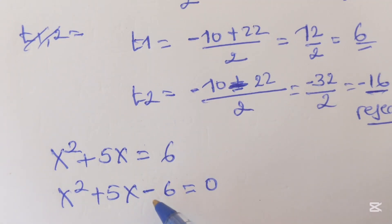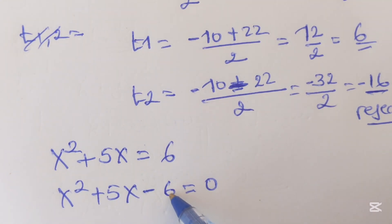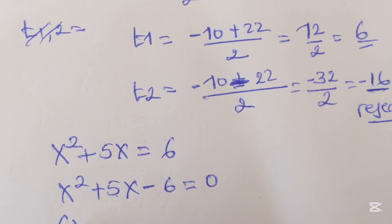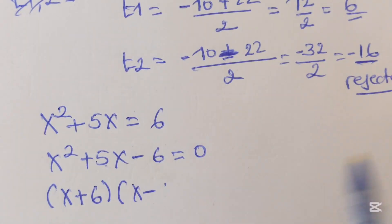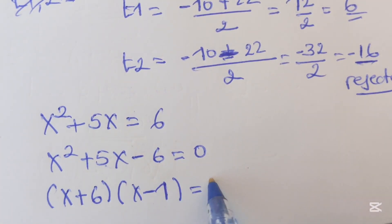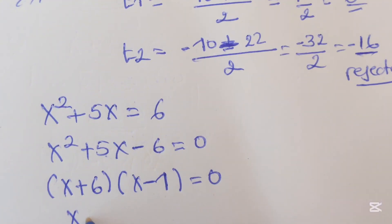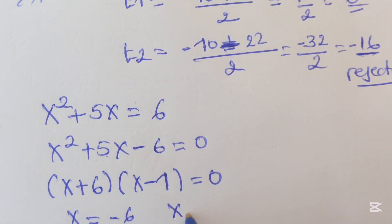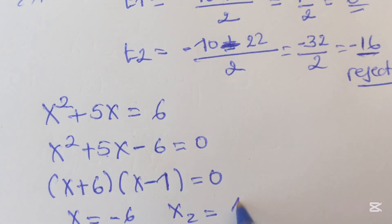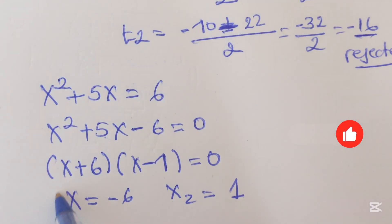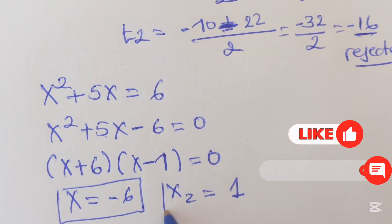Here we have to find numbers. Two numbers we can multiply to get negative 6 and the sum is equal to positive 5. Here we can get x plus 6 times x minus 1 equals 0. Of course here x will be negative 6, and x2 will be 1. This is our answer.